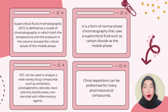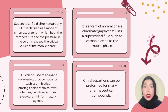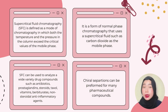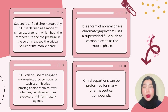Next is supercritical fluid chromatography, SFC. It is defined as a mode of chromatography in which both the temperature and the pressure in the column exceed the critical values of the mobile phase. It is a form of normal phase chromatography that uses a supercritical fluid such as carbon dioxide as the mobile phase. SFC can be used to analyze a wide variety of drug compounds such as antibiotics, prostaglandins, steroids, taxol, vitamins, barbiturates, and non-steroidal anti-inflammatory agents. Chiral separation can also be performed for many pharmacological compounds.